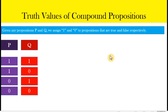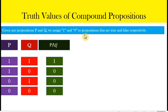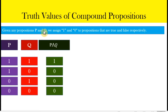Let us start with the truth values of our first compound proposition: conjunction. Given any two propositions p and q — simple propositions — we're going to assign the number one if the proposition is true and zero if it is false. Since we have two simple propositions, there are four possible combinations of the truth values of p and q: either both are true, both are false, or one is true and the other is false.